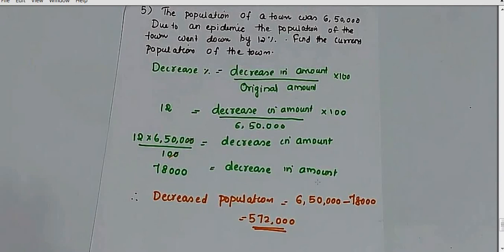So we take 6,50,000 and decrease it by 78,000. When we subtract: 6,50,000 minus 78,000 = 5,72,000. That is the total current population. So if there is a 12% loss in population of 6,50,000, the decrease equals 78,000, and the current population is 5,72,000. That is our final answer.